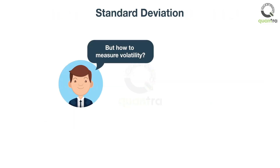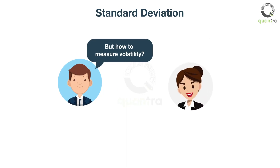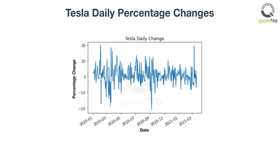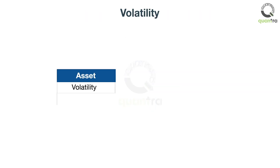But how to measure volatility? John called Mary and she replied that you can use the standard deviation formula to calculate the volatility of an asset. The standard deviation tells you how dispersed the price changes are from the mean value of the selected time period. John took the daily returns values of Tesla for a year and calculated the standard deviation, or volatility. It came out as 4%.